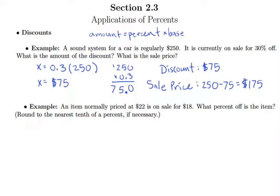This next example says an item normally priced at $22 is on sale for $18. What percent off is the item? And we'll round to the nearest tenth of a percent if necessary.